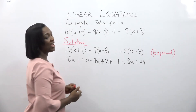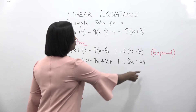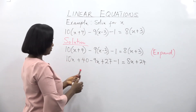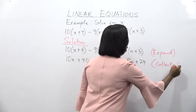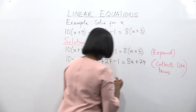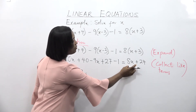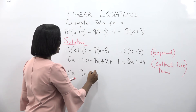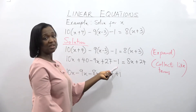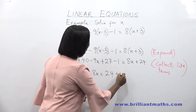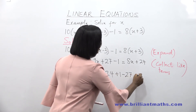We group the x-terms to the left hand side and the constant terms to the right hand side. That's 24, minus 1, 27, and 40. So: 10x minus 9x, and 8x comes from the right hand side to the left, so it becomes minus 8x. On the right hand side, minus 1 crosses and becomes positive 1. Plus 27 crosses and becomes minus 27. And 40 also becomes minus 40.